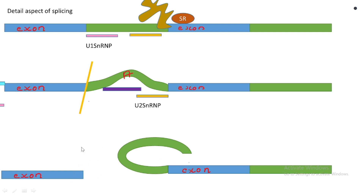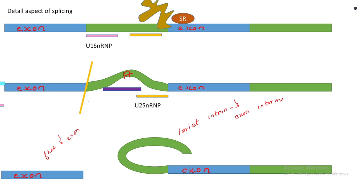What are the products formed as a result of the first cleavage? Towards the 5' end of this intron, there is a free 5' exon. It is called the free 5' exon because this exon is seen towards the 5' end of the intron that is in the process of being spliced out. The other half that remains is the lariat-intron-3' exon intermediate.